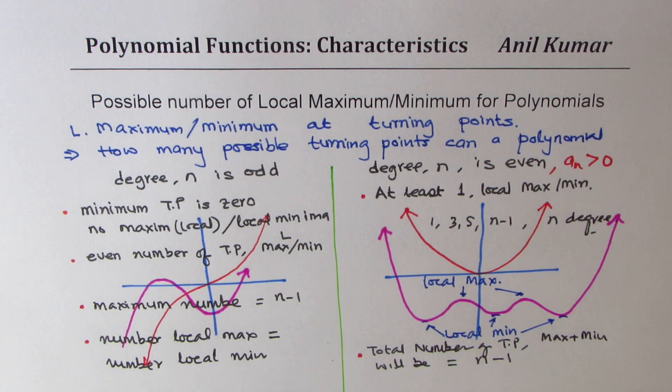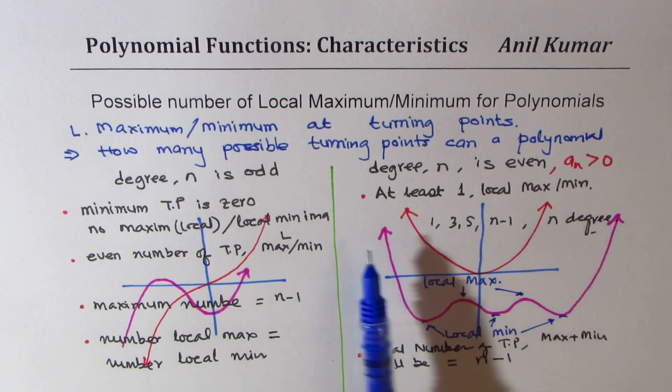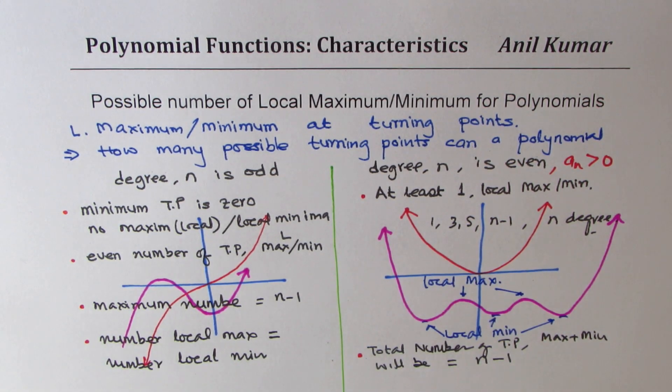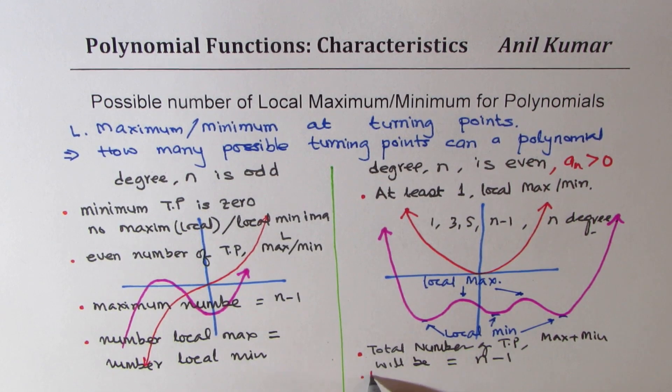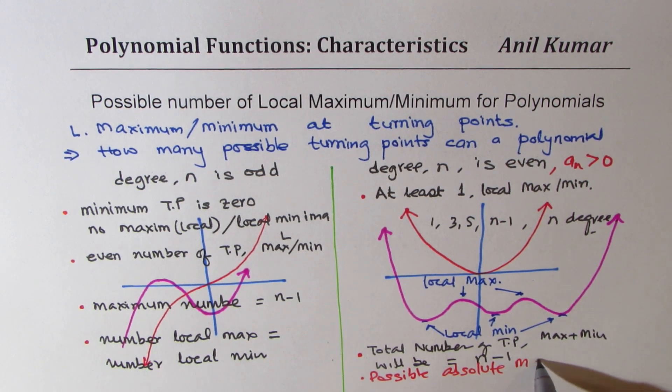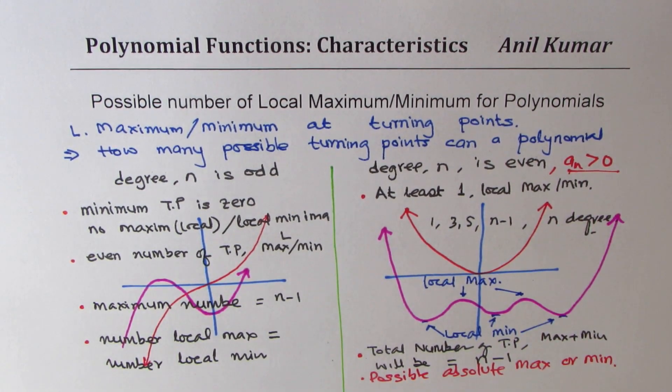So I hope that helps you to understand how to find total number of maximum, local maximum, and local minimums. So all these points are local maximum and minimum, since you see that the function extends from one infinity to other. In the case of even degree polynomials, there is a possibility to have absolute maximum or minimum. So here, we can write here, we can have possible absolute maximum or minimum depending on, of course, the leading coefficient. So that is how we could summarize number of local maximum minimum for degree of polynomials.